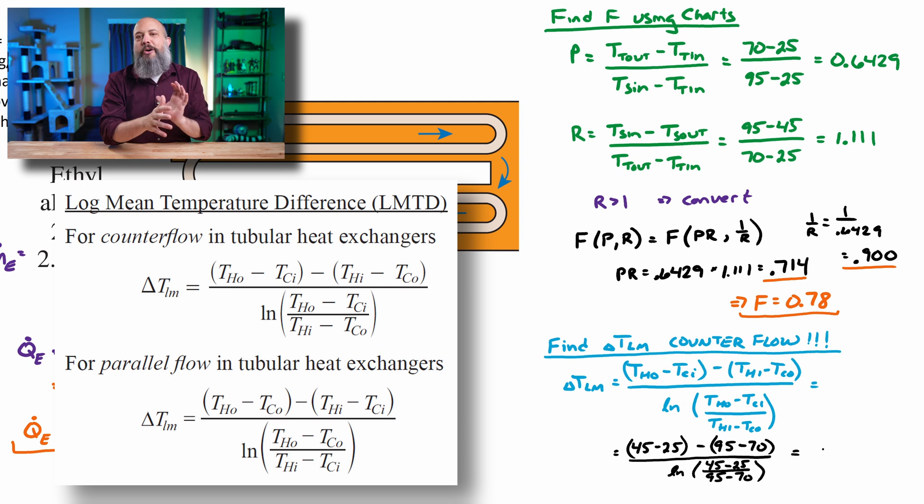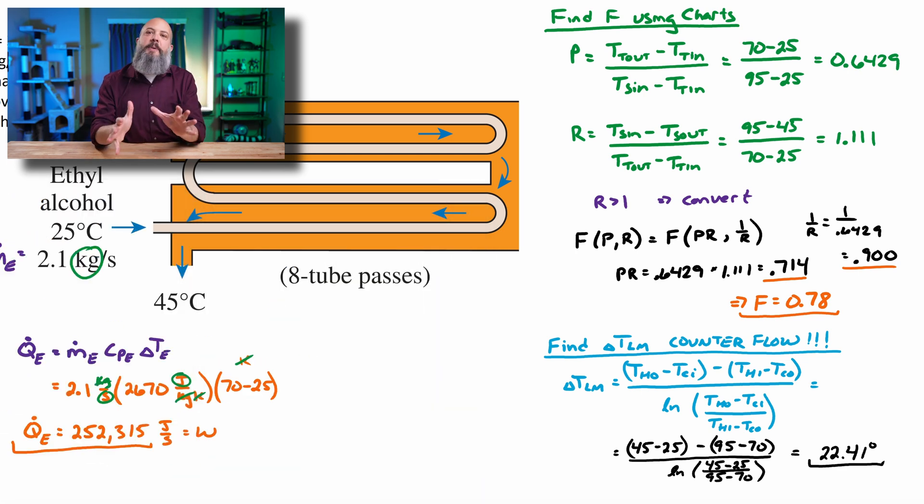So 45 minus 25 is 20 and 95 minus 70 is 25. So when we plug in all these numbers, we get 22.41 for delta T_LMTD, which is what we expect. We expect it to be in between 20 and 25.